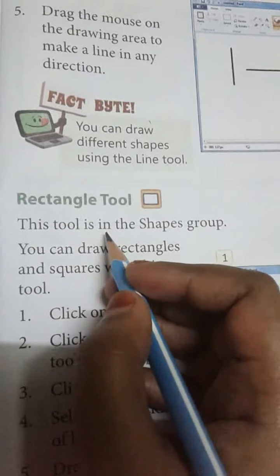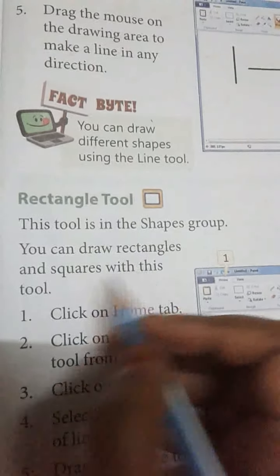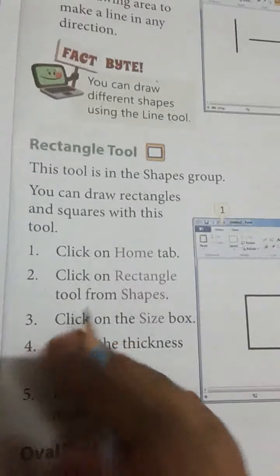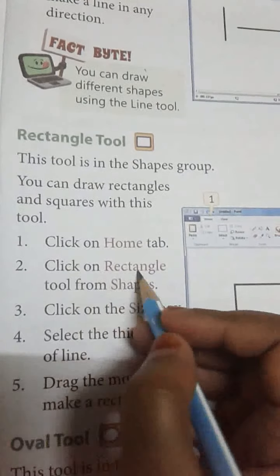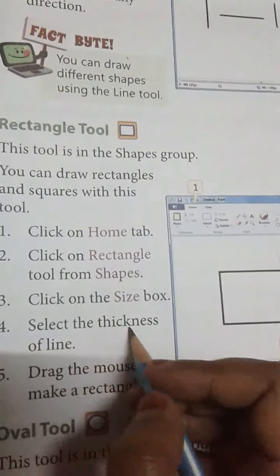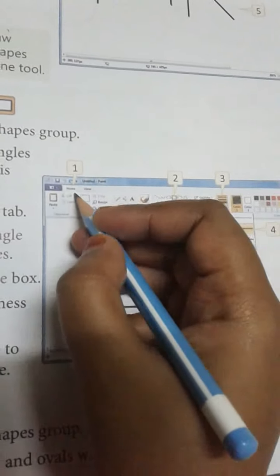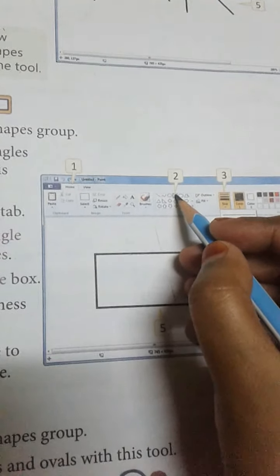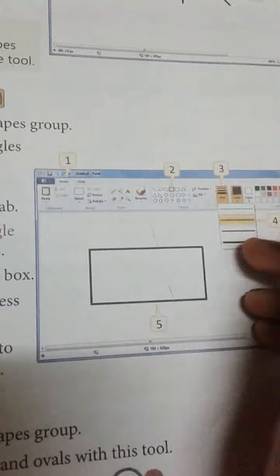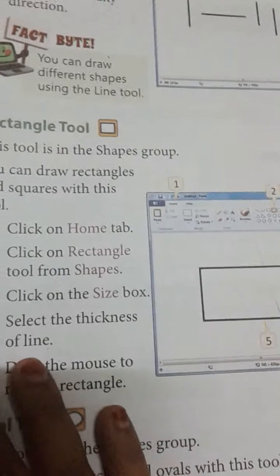The Rectangle tool is in the shape group. You can draw a triangle and square with this tool. Steps: Click on the Home tab, click on the rectangle tool from shapes, click on the size box, select the thickness of the line, then drag the mouse to make the rectangle in the drawing area.